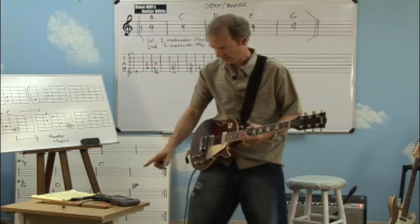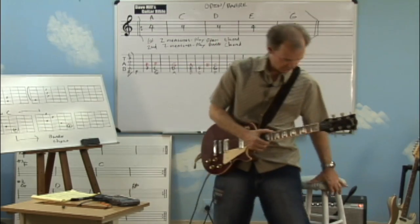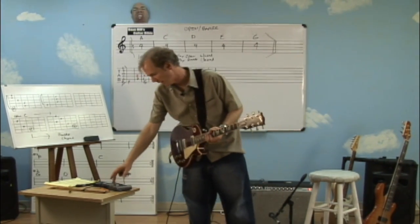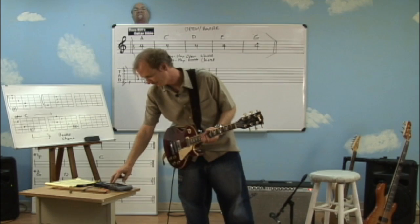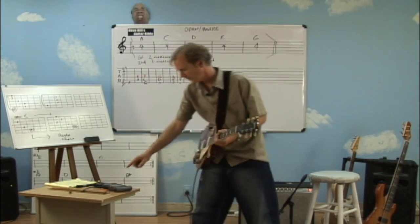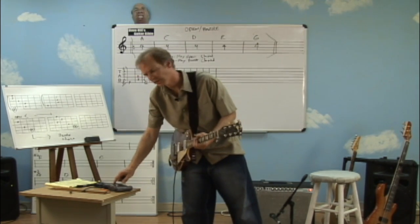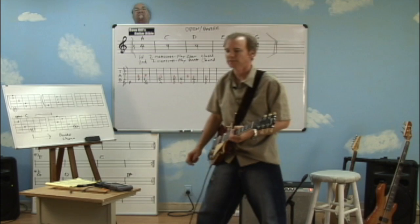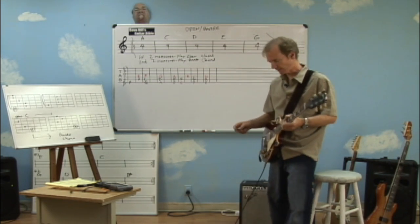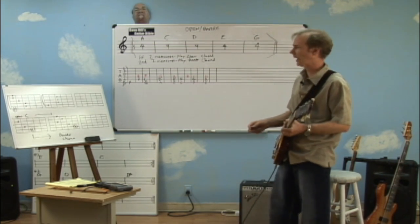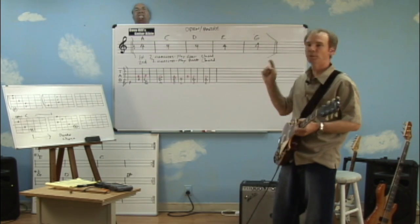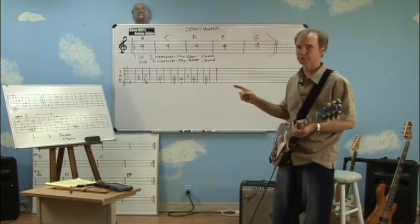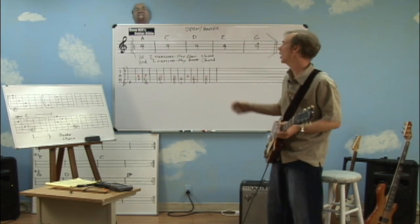Let's try that out with a little shuffle groove — just a warm-up and a review to make sure you're learning this information. I'll start my drum machine and get out of the way so you can see the progression. Let me slow it down a little bit. Open chords for the first two measures, fretted chords for the next two measures. Here we go: one, two, one, two, three, four.